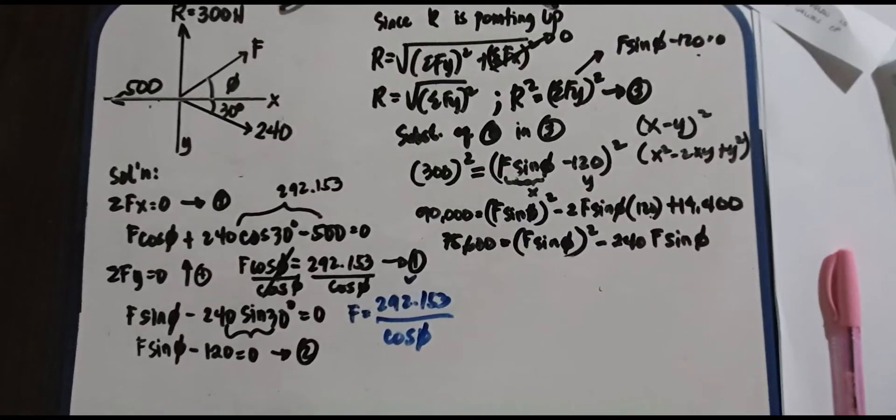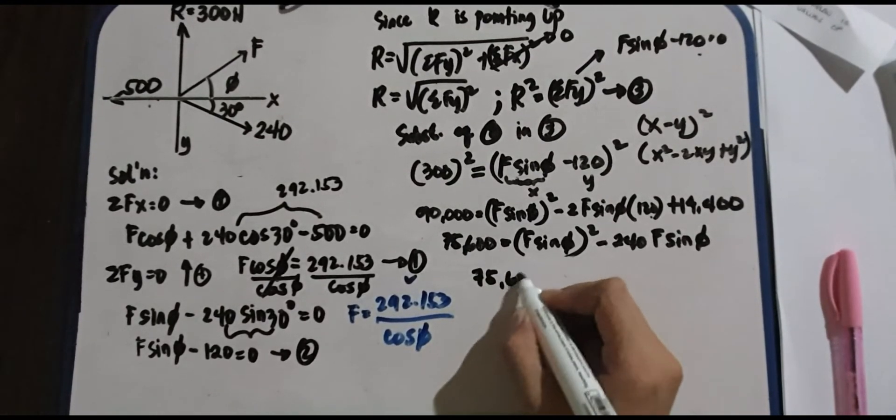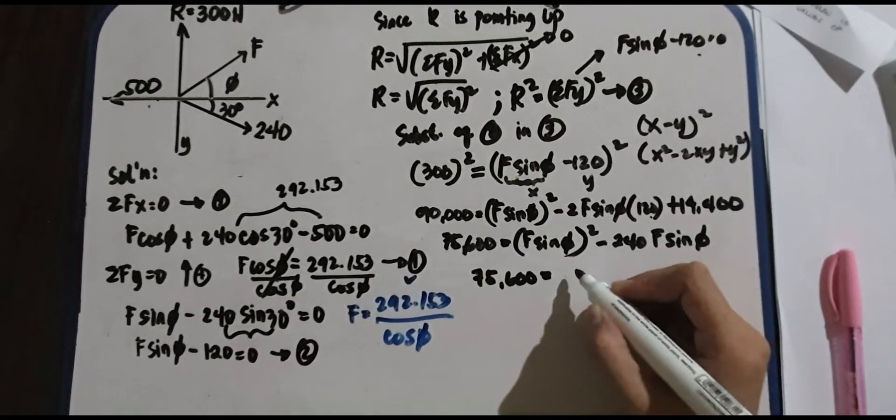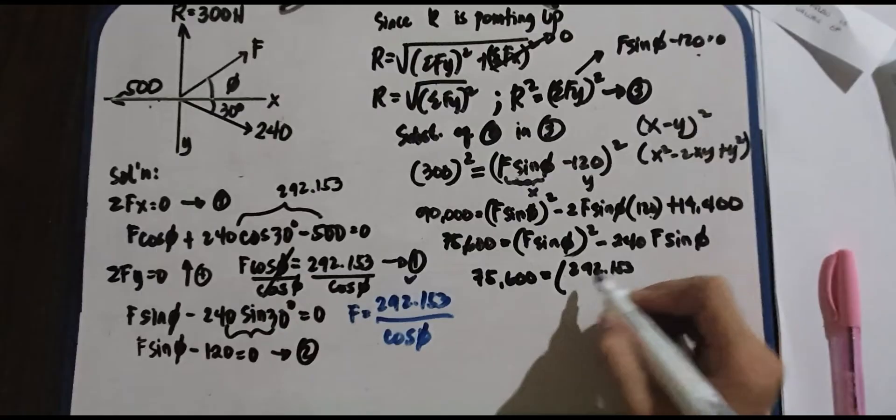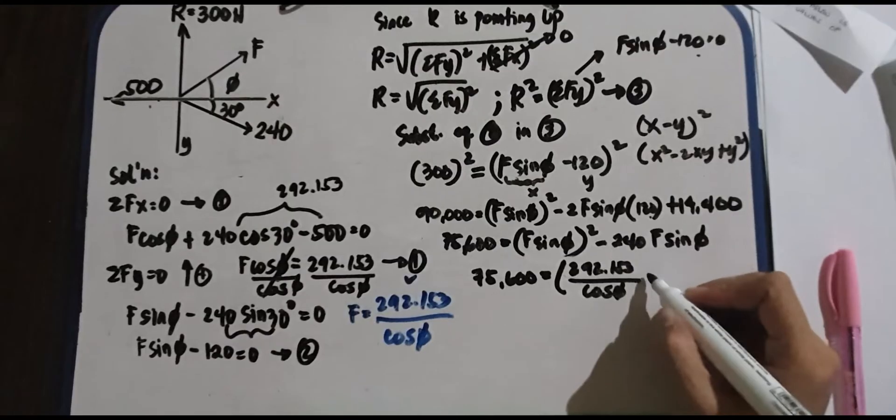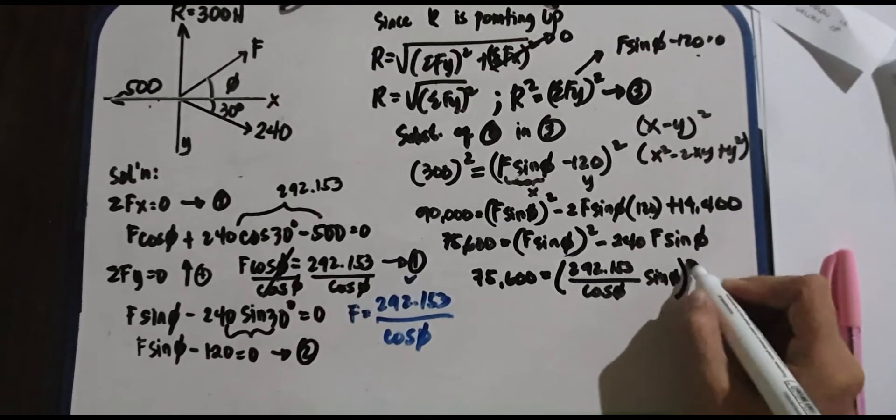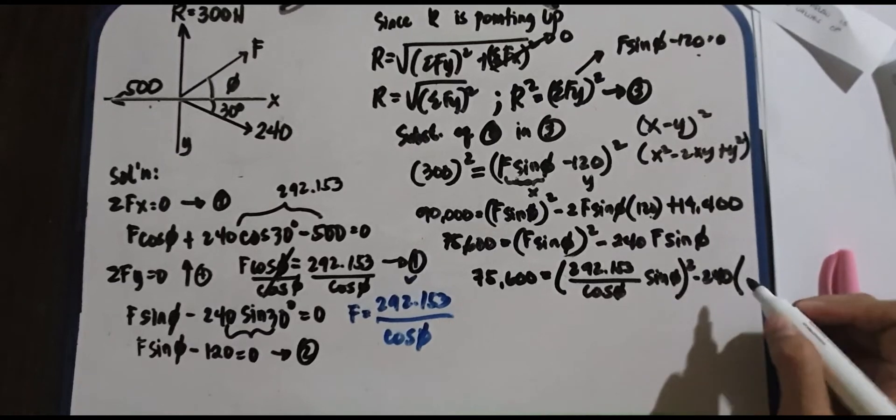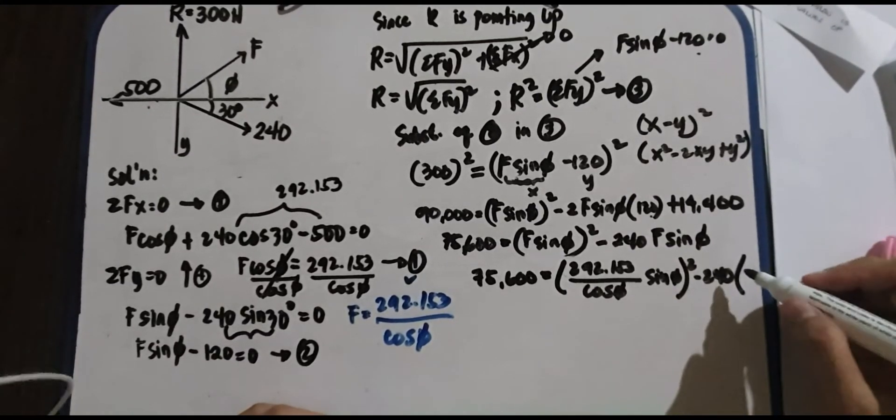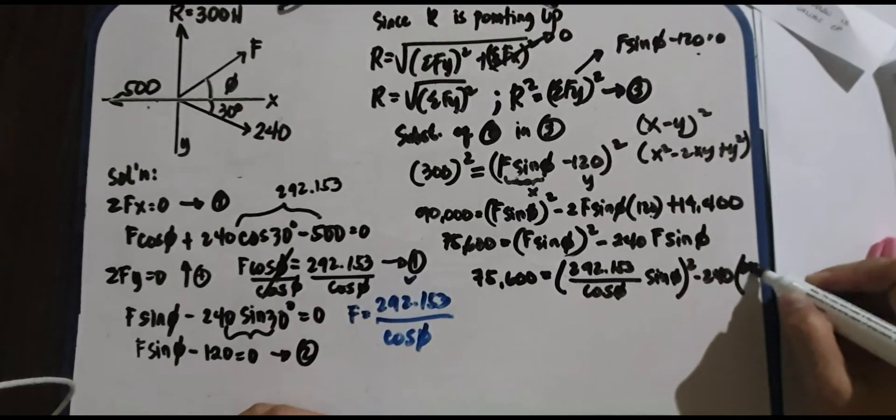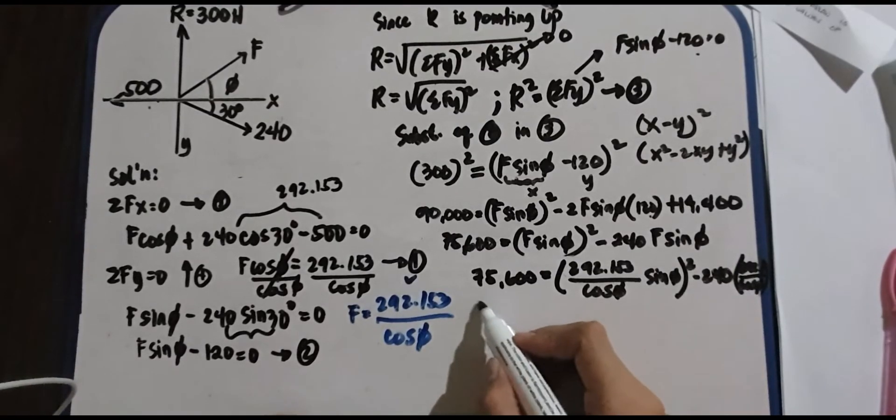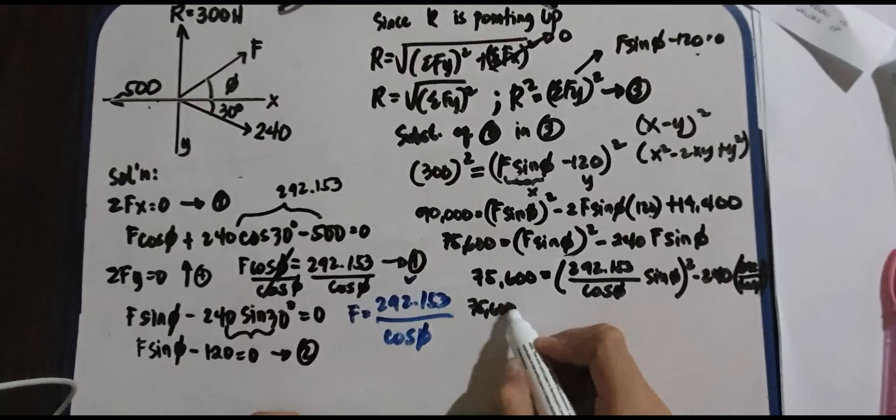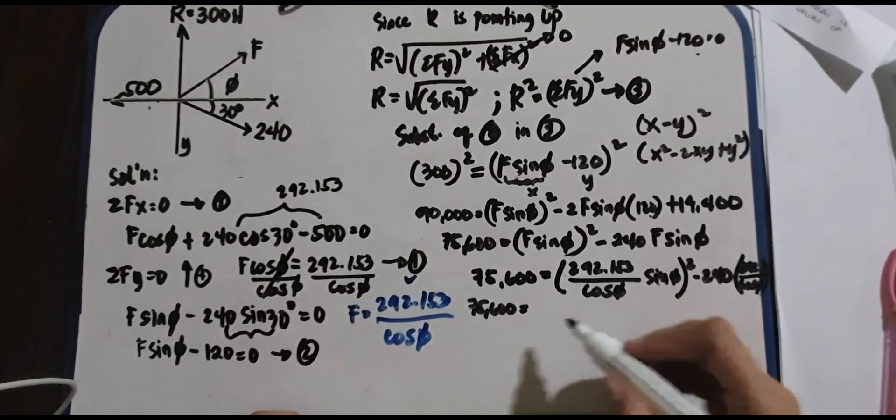So we have to substitute all the value of F there in our formula. So we have 75,600 equals, what is your F? Let's put it there, 292.153 all over cosine of phi, sine phi, squared, minus 240 times the value of F sine phi. So let's put it there, 292.153 all over cosine of phi.